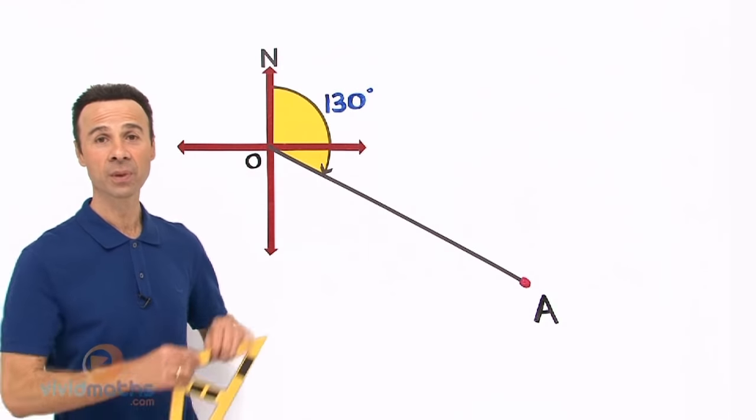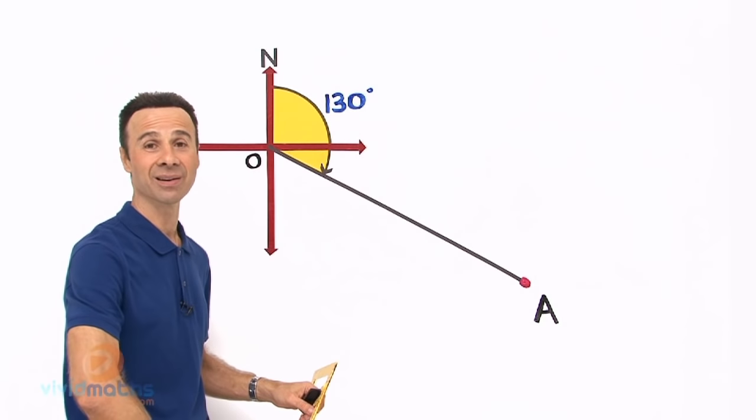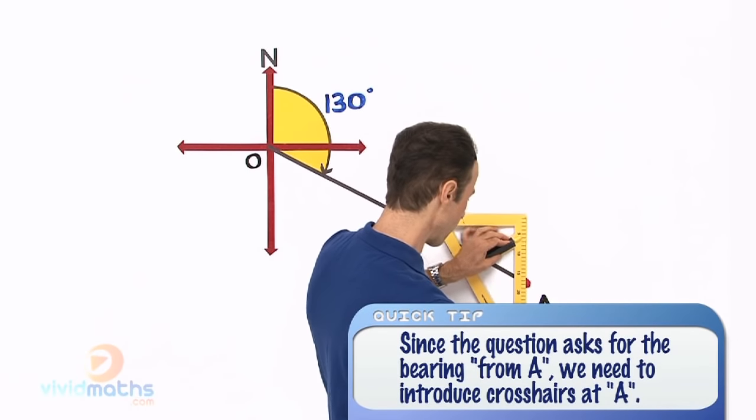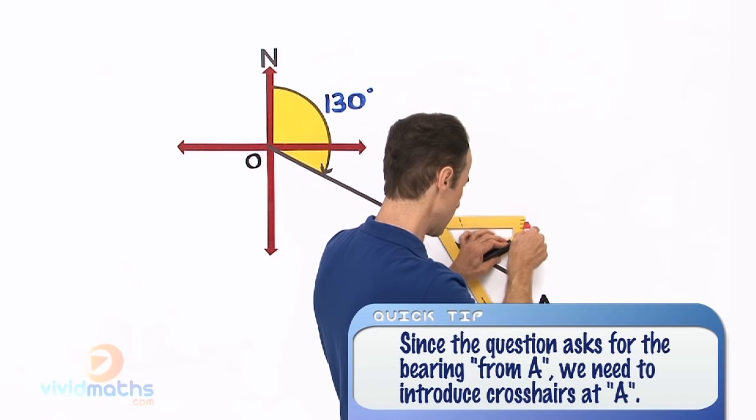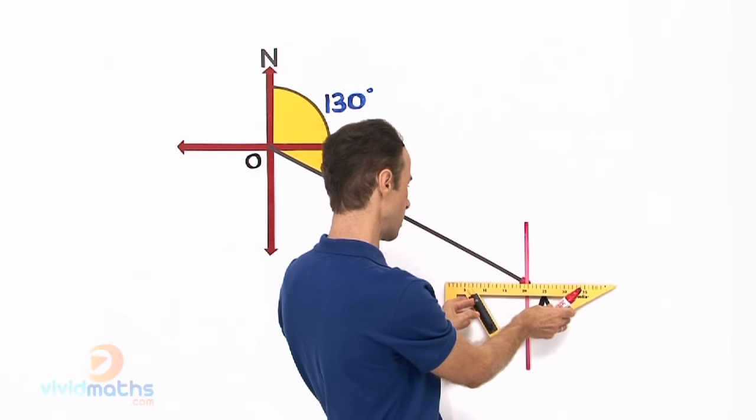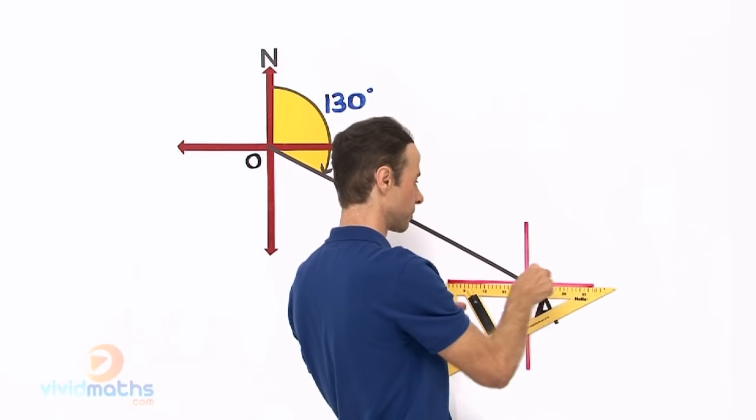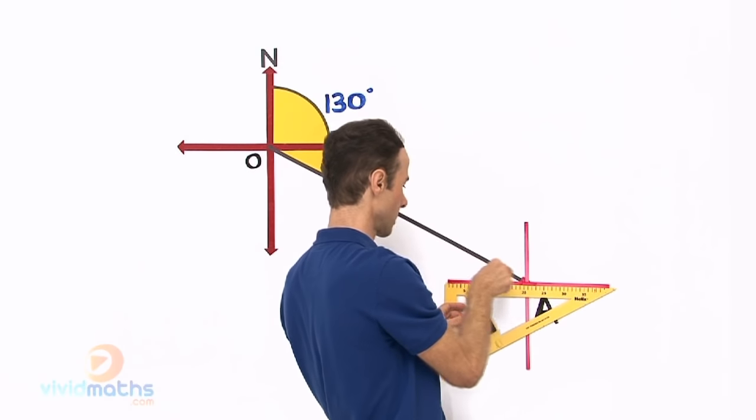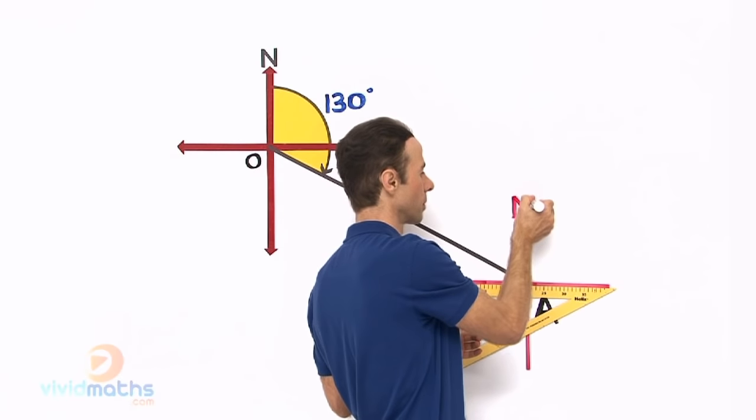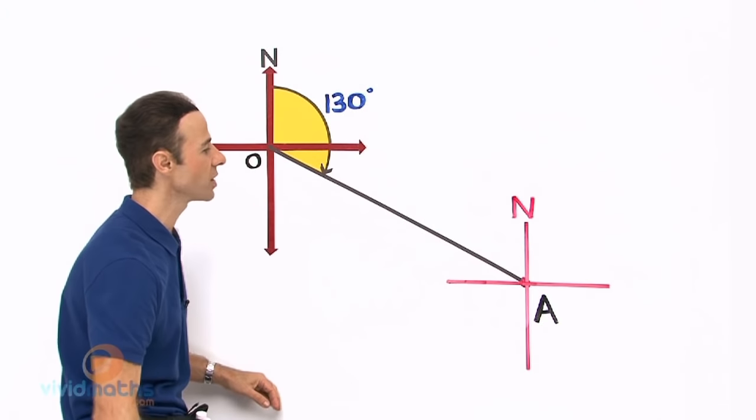So I got my trusty ruler. There it is, and I am going to draw in the crosshairs so we can take a closer look at this diagram. So let us draw in the north-south first of all. There is our north-south, and then across here we will just draw in the east-west. Let us put in our north. OK, there is our trusty crosshairs.